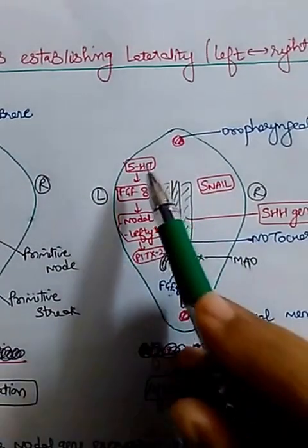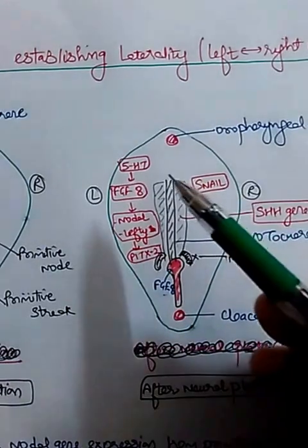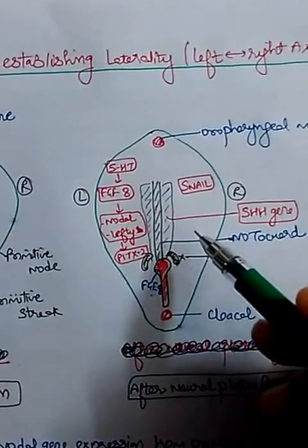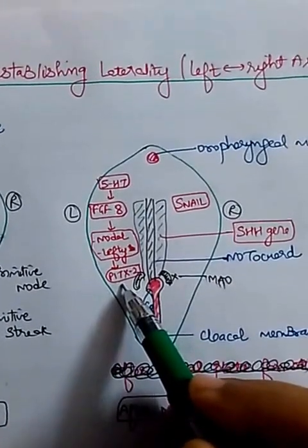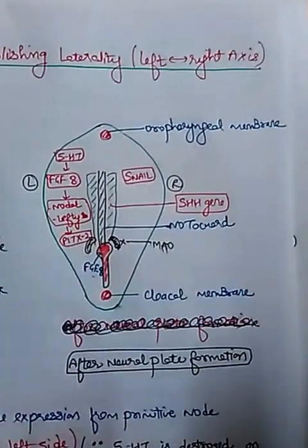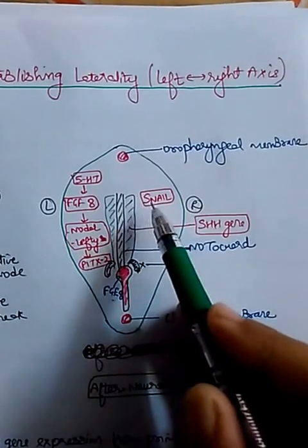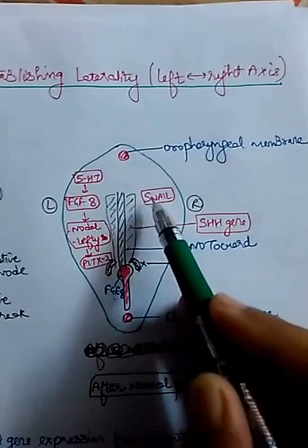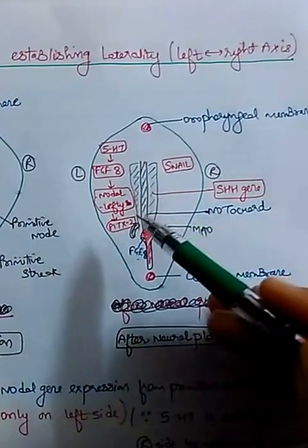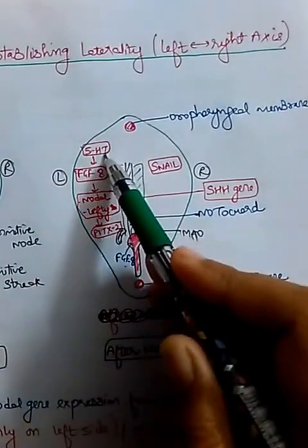The question is why 5-HT is active only on the left side and not on the right side. This is because serotonin is destroyed by monoamine oxidase, and monoamine oxidase is present on the right side, which destroys it there. Why it does not destroy it on the left side is still a mystery. Most of the genes are responsible for left-sidedness of the embryonic disc. On the right side, there is only one gene — the snail gene — which is responsible for right-sidedness.